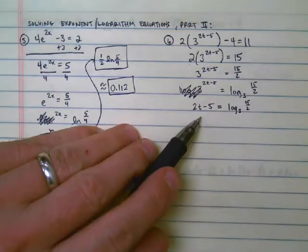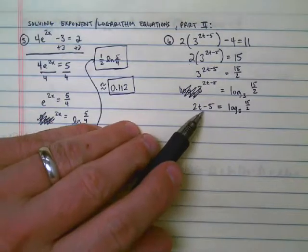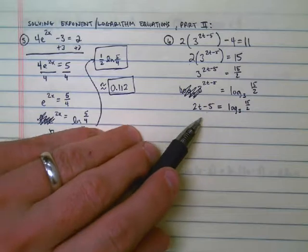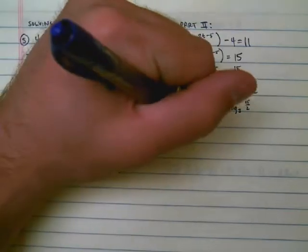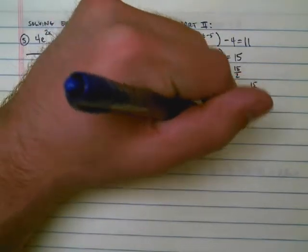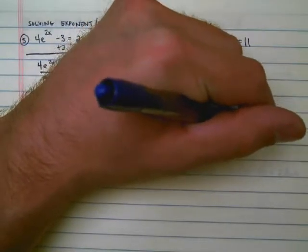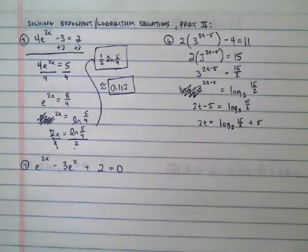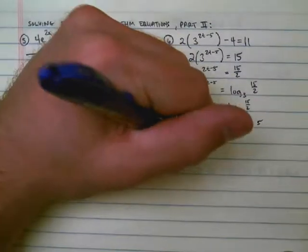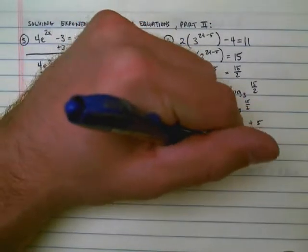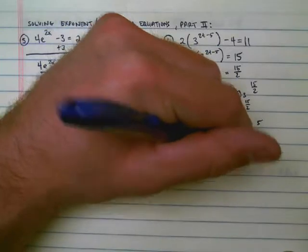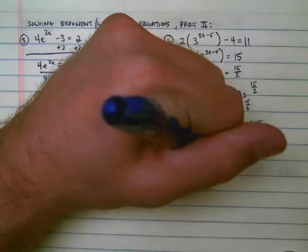Now, to get t by itself, I see I have a couple more things I need to do. I need to add 5 and divide by 2. So 2t would be log base 3 of 15/2 plus 5. And then t equals (log base 3 of 15/2 plus 5) divided by 2.